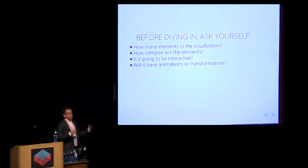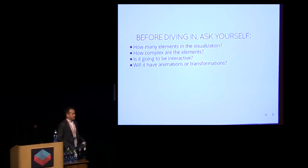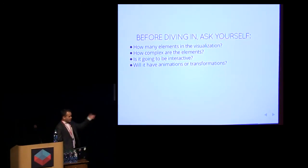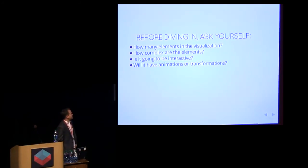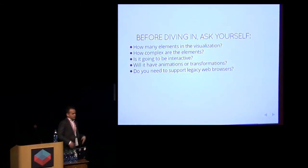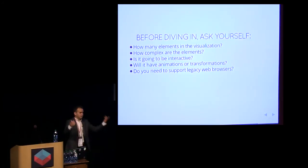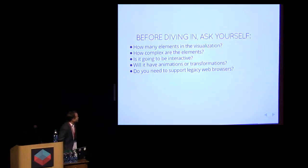Will you have animations or transformations? As I showed in the Japan earthquake example, we tried using SVG where we were appending circles all the time in an animation trying to run at a couple of frames per second — it's very hard when you have a lot of elements to query later. Using Canvas, on the other hand, you just have a set of pixels you're drawing on, and it's easier. Do you need to support legacy web browsers? If you do, you need to think about your fallback strategy. In our case it was a static image. If you have an animation, you might want to show a video or an animated GIF — which, believe it or not, has worked for us, at least internally.